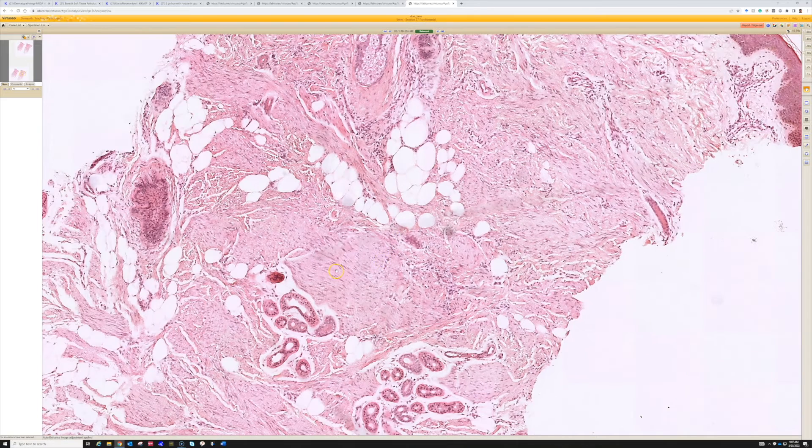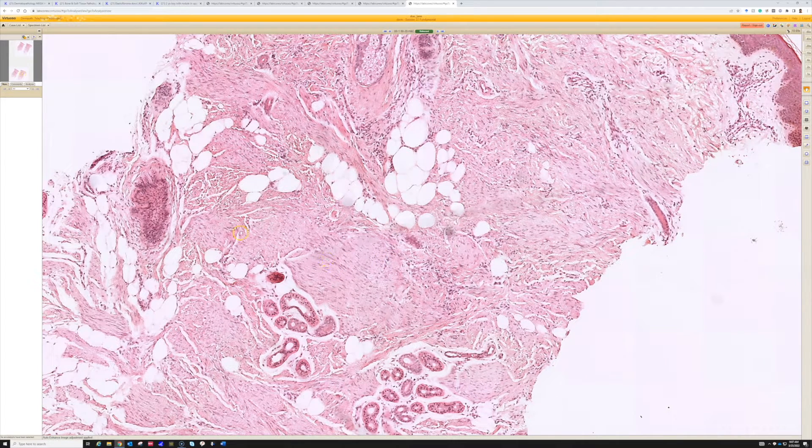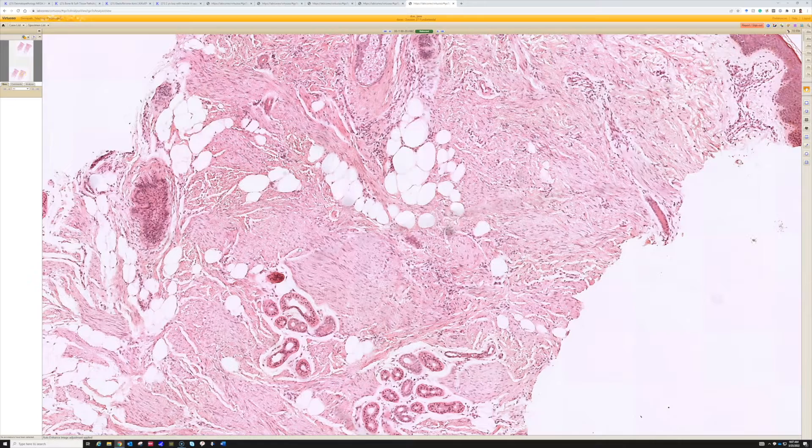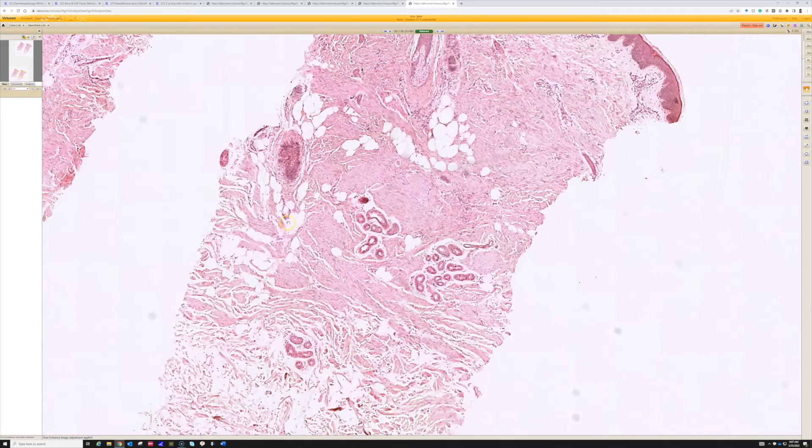So that's the one thing that helps me. If I have CD34 positive and it's going into the fat but has fascicles like this, then it's probably a benign CD34 positive fibroblastic connective tissue nevus. And if you're having trouble, of course, you can do FISH to exclude DFSP.